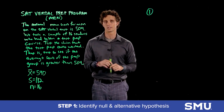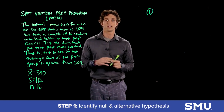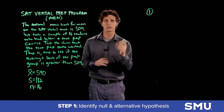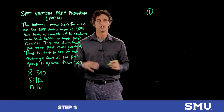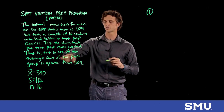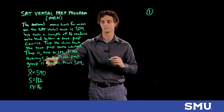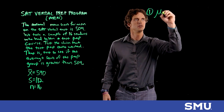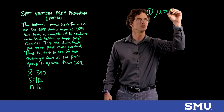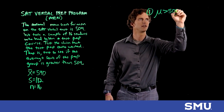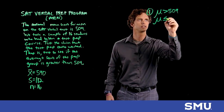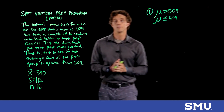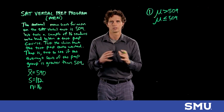Step one of the six steps is to identify our null and alternative hypothesis. I always recommend writing down the claim first — don't write the null and alternative right away. Write the claim first, then the direct opposite. The claim here is to test whether the average score of the test prep group is greater than 509, so we're testing whether mu is actually greater than 509.